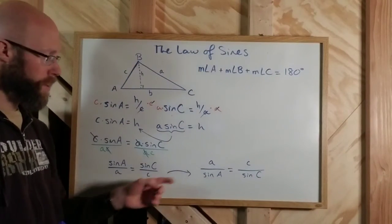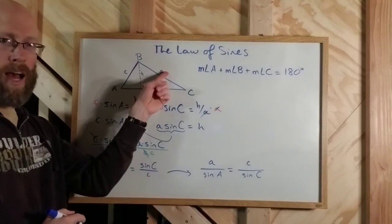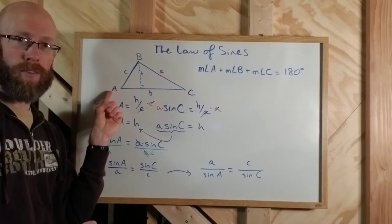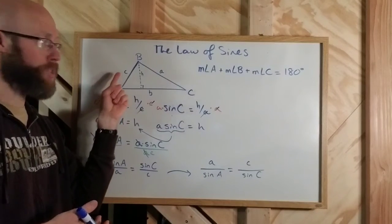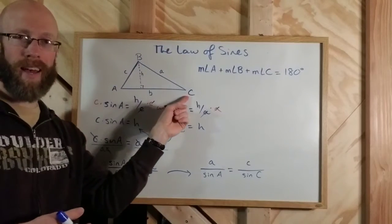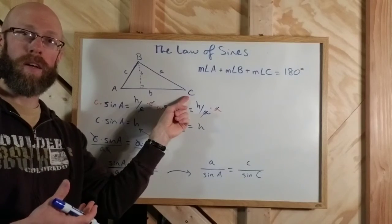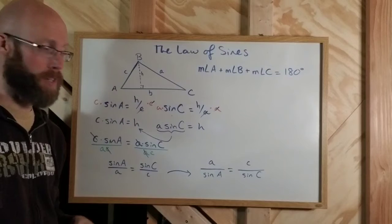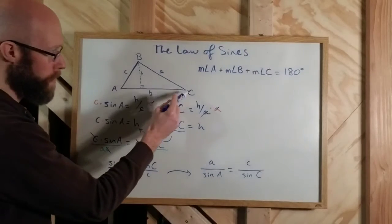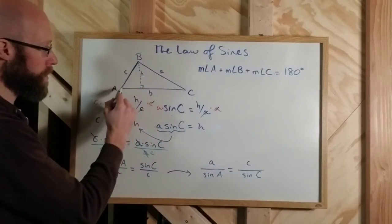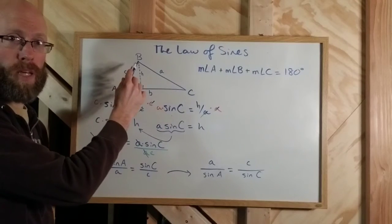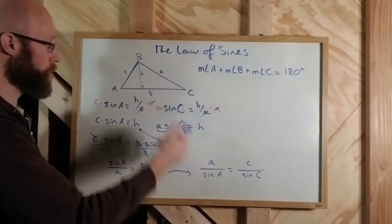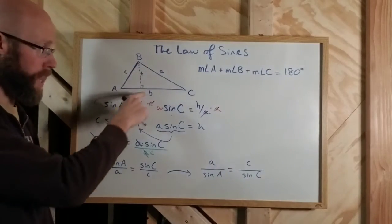Okay? Essentially what we have is a side, the ratio of a side divided by the sine of the opposite angle, will equal the ratio of a side divided by the sine of the opposite angle for any angle. Okay? For any side angle combination. In fact, I could have drawn my perpendicular from any of the three vertices, not just from B. And I would have been able to create a similar equation with angle B and side B.